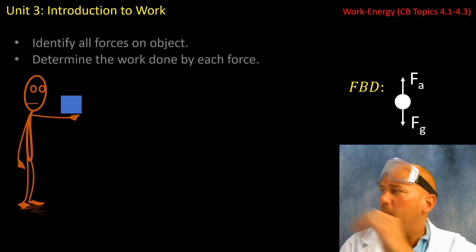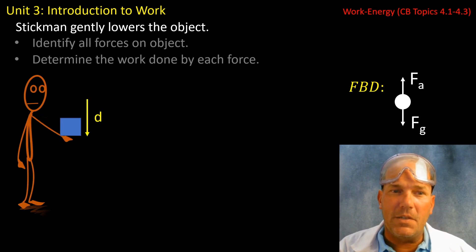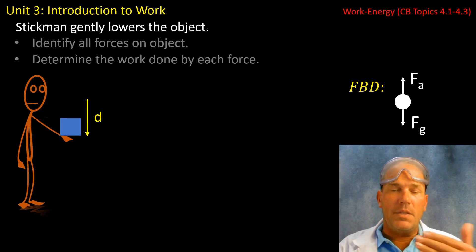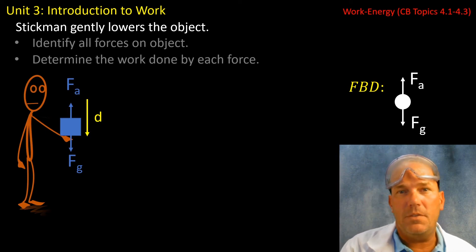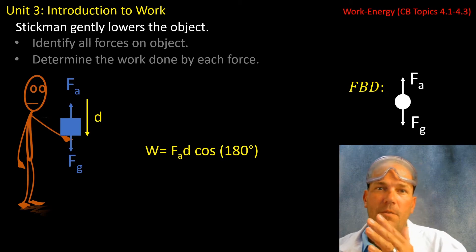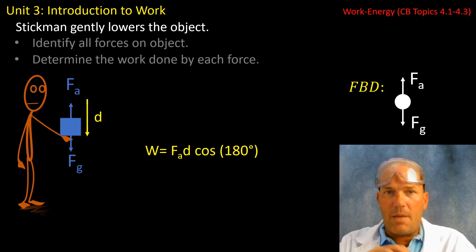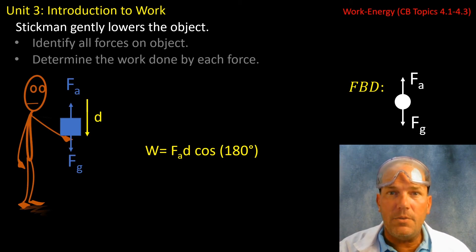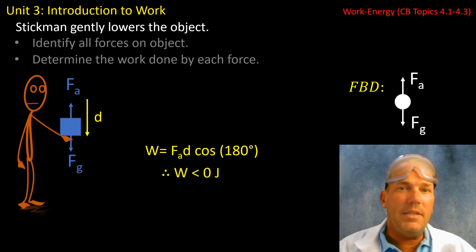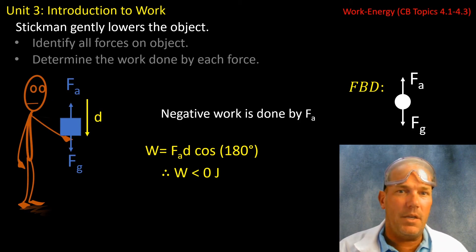Now let's look at another scenario. Stickman gently lowers an object. The displacement of that object was down. The forces are the same for the free body diagram, so let's consider the work done by each of these forces. First, the force applied: the upward force of the hand onto the object is up, but the displacement was down — parallel but in the opposite direction — it is 180 degrees. The angle determines that the work being done by the force applied is less than zero joules. In other words, it's negative — negative work is being done by the force applied.